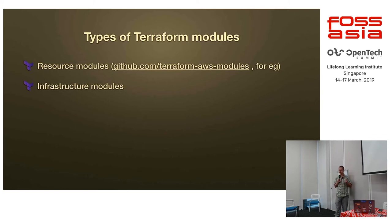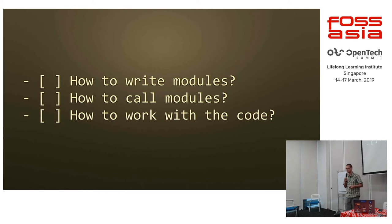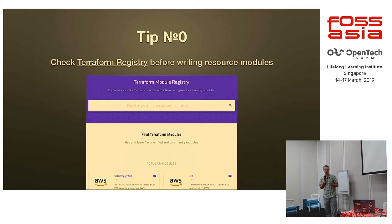Was it clear so far? Good. Because we are getting deeper and deeper. Let's look into how to write modules, and then we'll look at how to call them and some tips on how to actually use Terraform. The first tip I want to give about writing resource modules is to not write them. Really — go to the Terraform registry, which is the official place where you can download and see source code of about 650 AWS modules, for example.